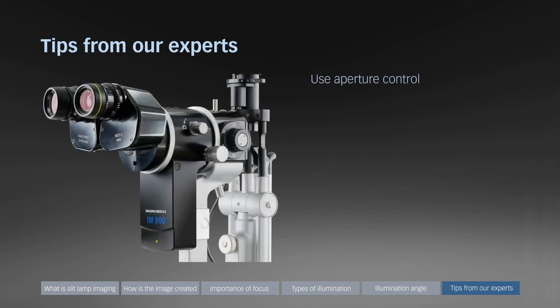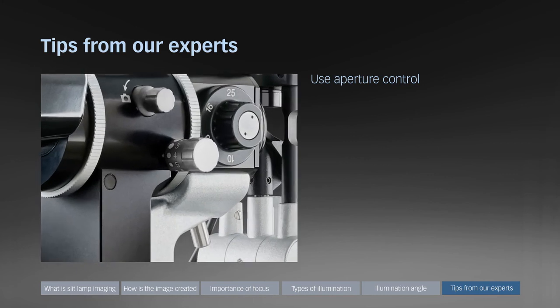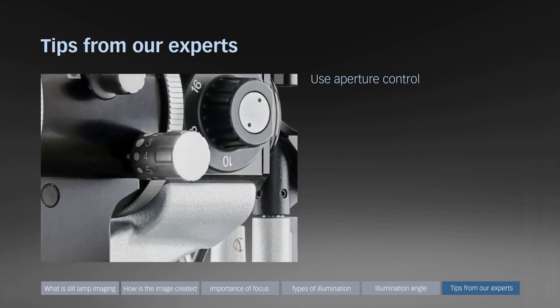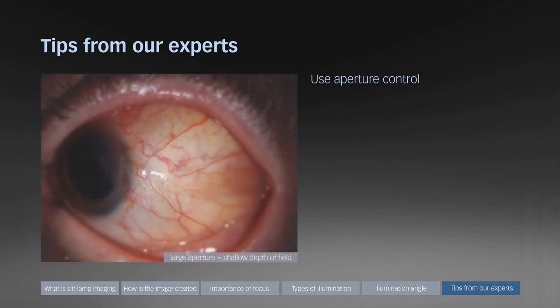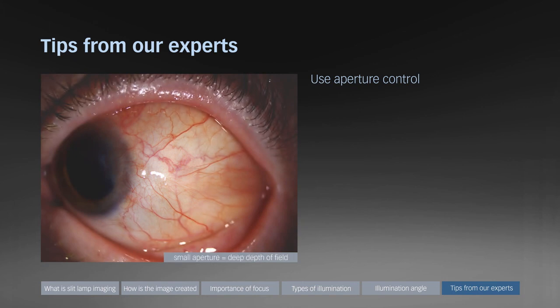Use aperture control. The Haag-Streit IM900 Imaging module provides aperture control. Use a large aperture if little light is available and a small aperture if deep depth of field is required. Here an example of an image with shallow depth of field. Here the same eye with deep depth of field.